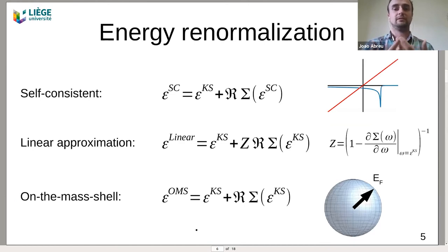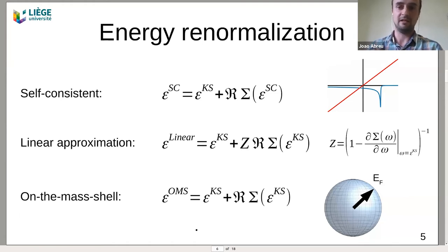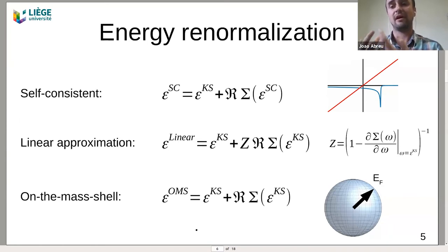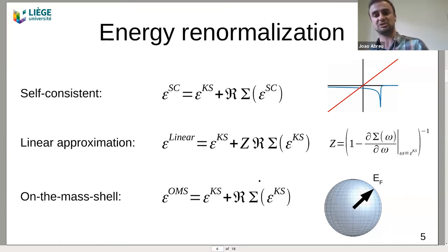To obtain the corrected eigenvalue, there are three approaches. First, the self-consistent approach adds the real part of the self-energy evaluated at the new corrected eigenvalue. Second, the linear approximation approximates the self-energy around the cumulant energy to obtain a Z-factor normalization. Third, the on-mass-shell approach evaluates the self-energy directly at the cumulant energy.